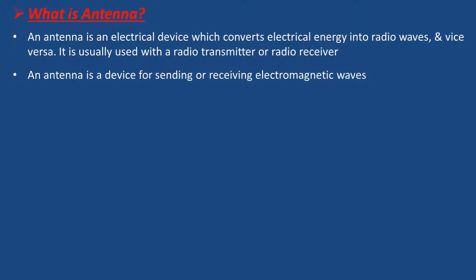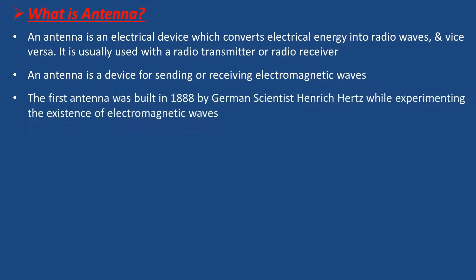An antenna is a device for sending or receiving electromagnetic waves. The first antenna was built in 1888 by German scientist Heinrich Hertz, while experimenting the existence of electromagnetic waves.